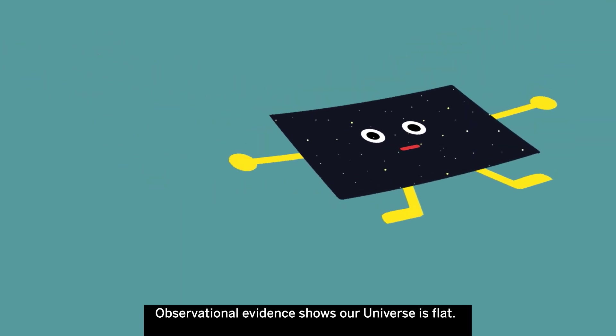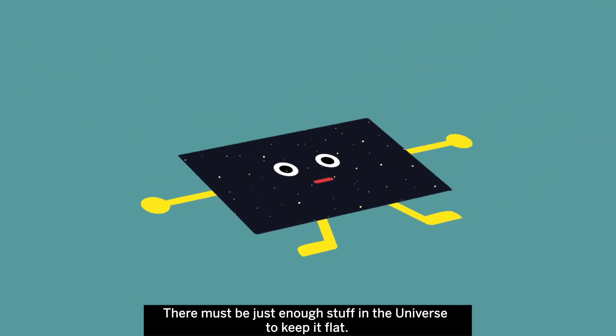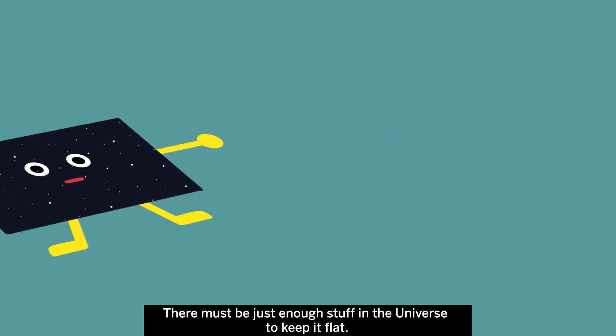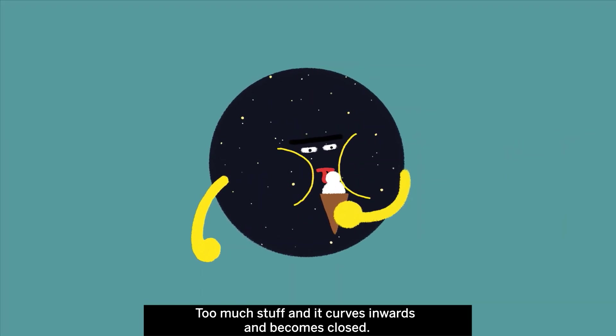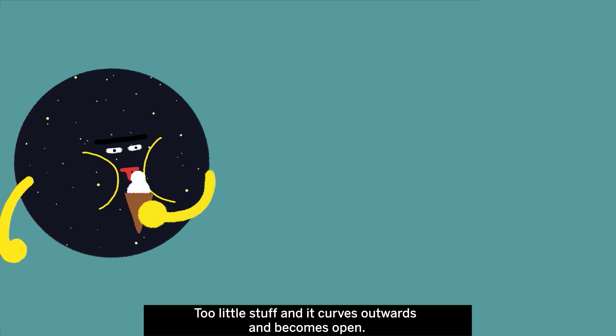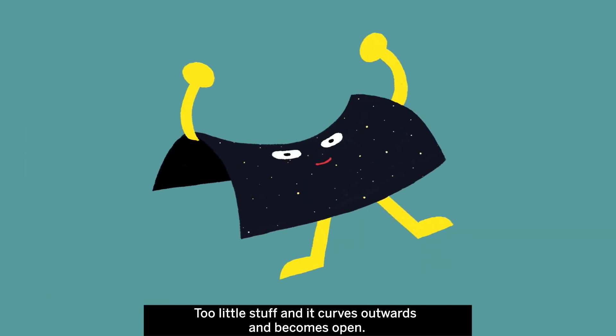Observational evidence shows our universe is flat. There must be just enough stuff in the universe to keep it flat. Too much stuff, and it curves inwards and becomes closed. Too little stuff, and it curves outwards and becomes open.